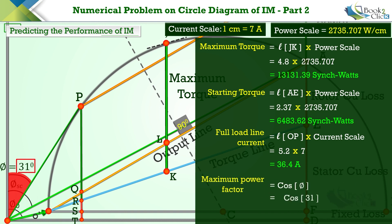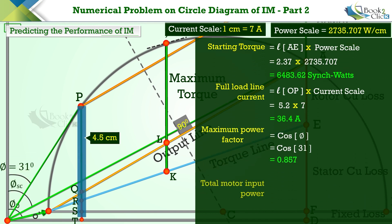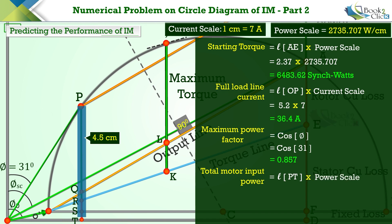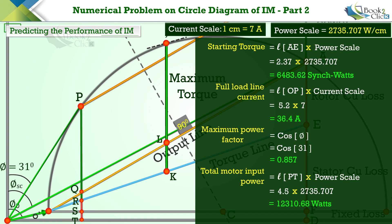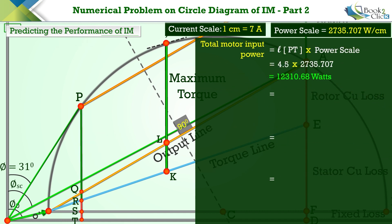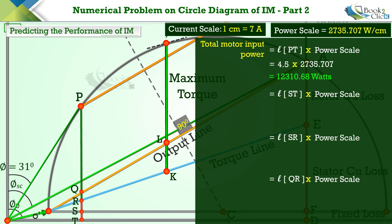The cosine of the full load lag angle gives the power factor of the motor. Cos of 31 degrees is 0.857. Multiply the length of line PT by the power scale to get the total motor input power. The length of line PT is 4.5 centimeters, giving a total motor input power of 12,310.68 watts.